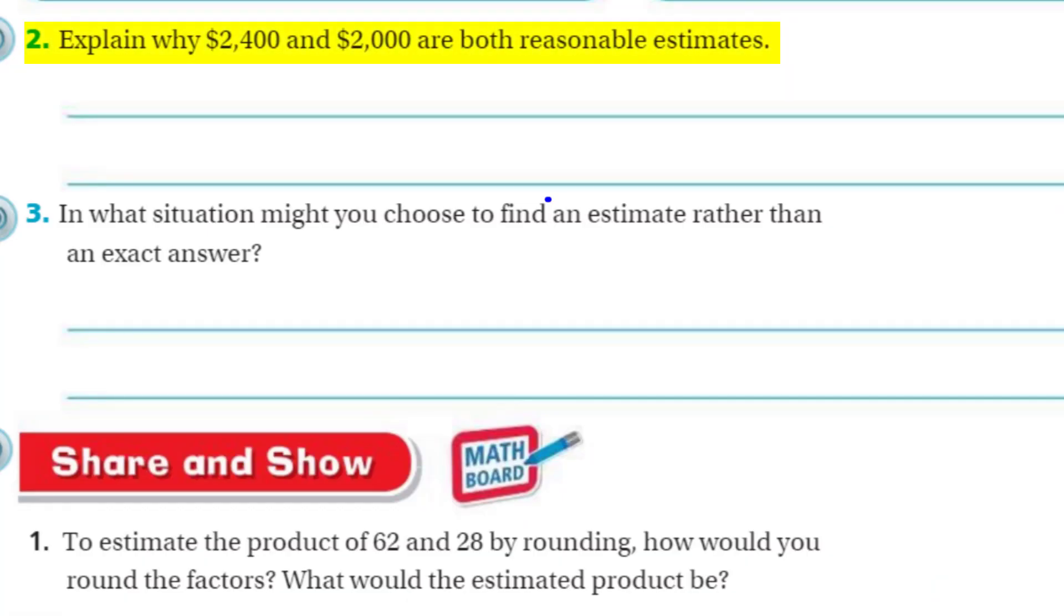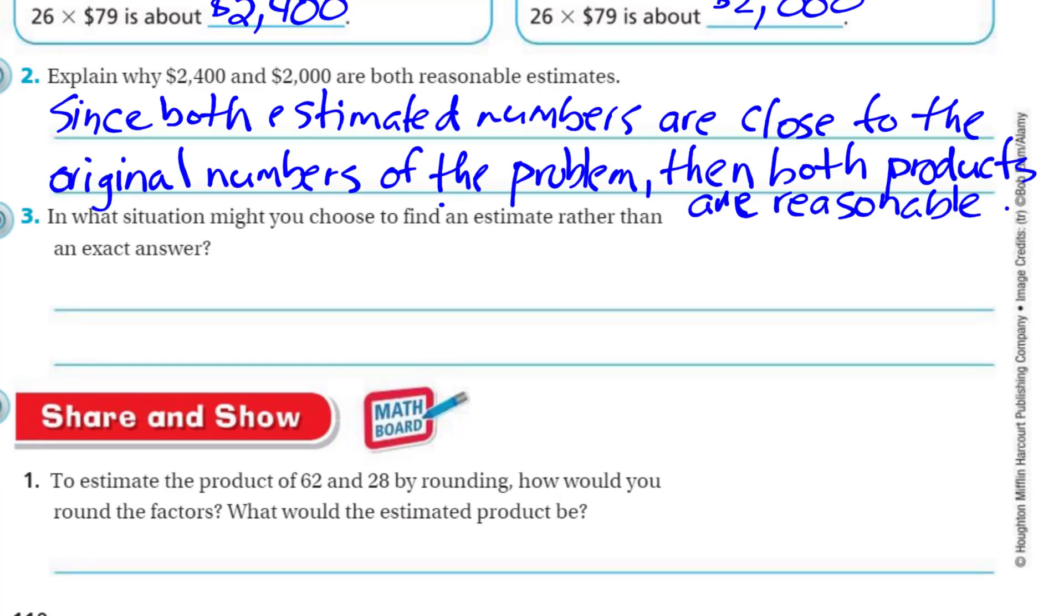Let's look at number two. It says, explain why $2,400 and $2,000 are both reasonable estimates. Well, my thinking on this one is that since both the estimated numbers that we used, the compatible numbers and the estimated numbers, since they were so close to the original number, the actual number of the problem, then both estimates would be reasonable. It says, in what situation might you choose to find an estimate rather than an exact answer? I think one situation where I might just use an estimate. You know, like in San Diego, the San Diego Padres, they play their games at Petco Park. There wouldn't be any possible way that you could count everyone at the park, but you could come up with an estimated answer.